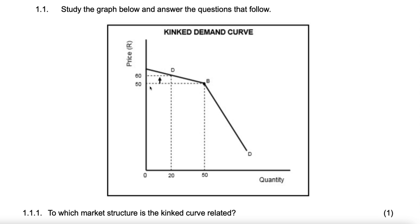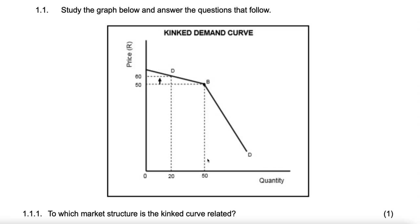The best price is 50 rand and the quantity will be 50 units. We know that because the best price for an oligopoly is where its demand curve kinks.